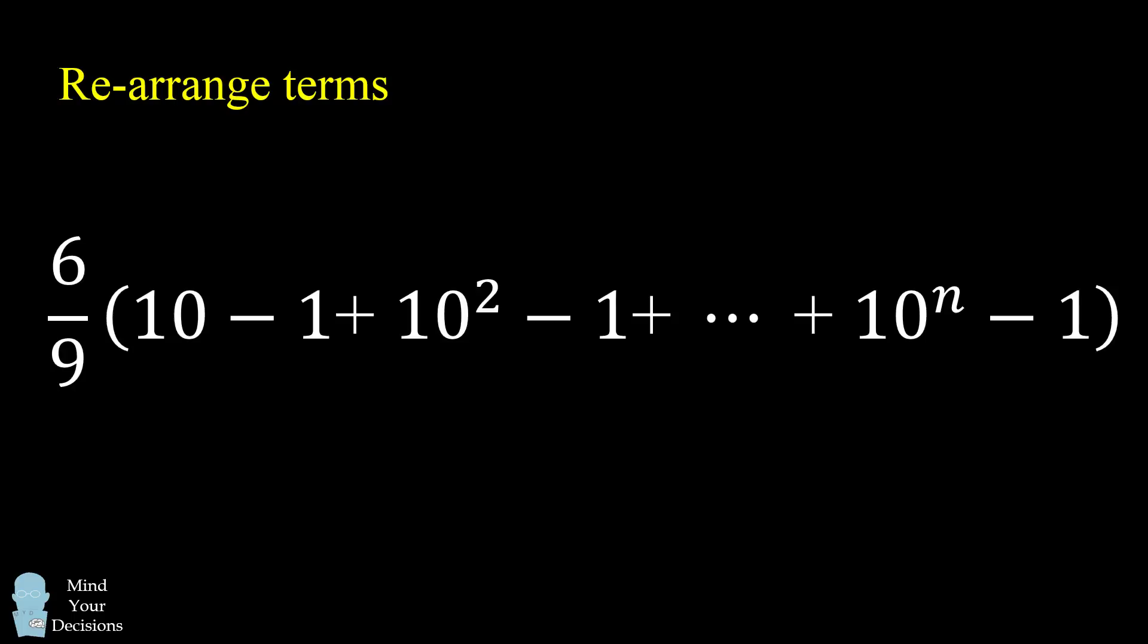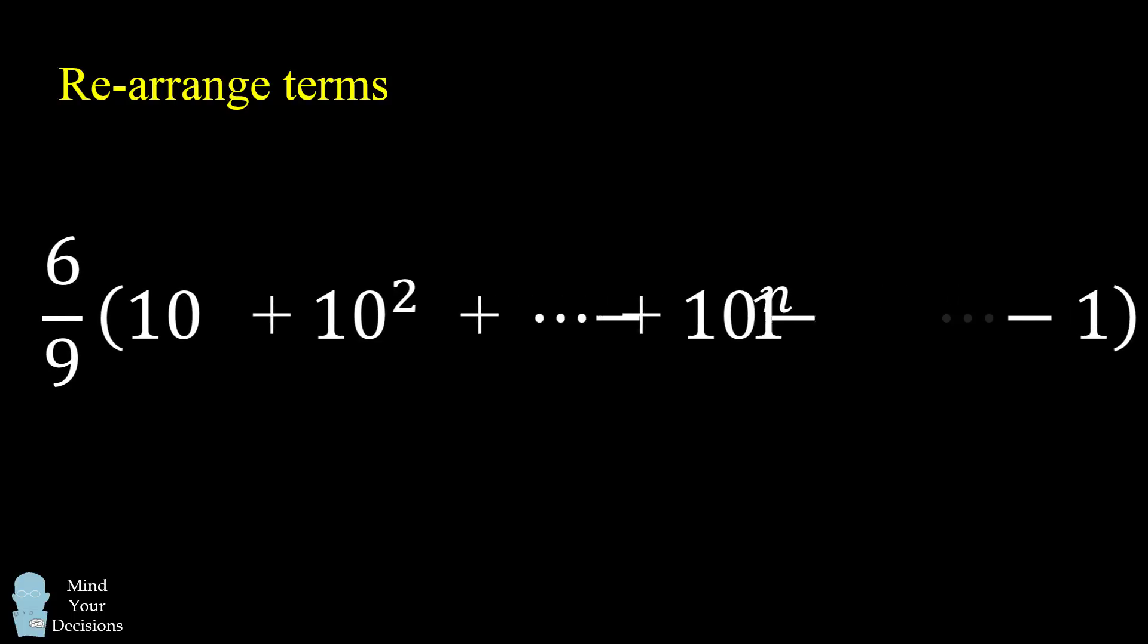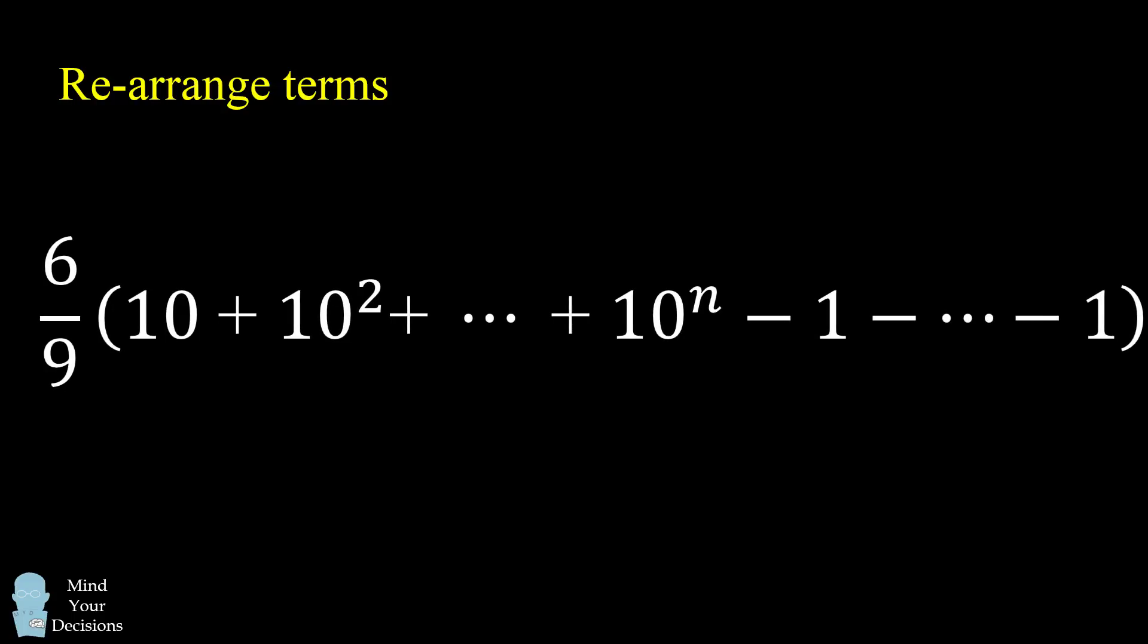So now let's rearrange the terms in this summation. We'll group all the powers of 10 on the left and all the negative ones on the right. Now each of the groups had a negative 1, so there will be n terms of negative 1. This will simplify to be negative n.